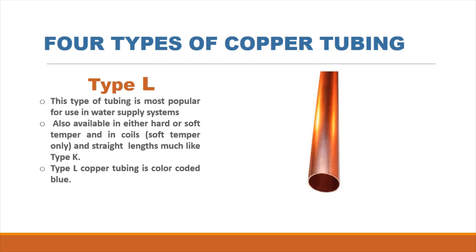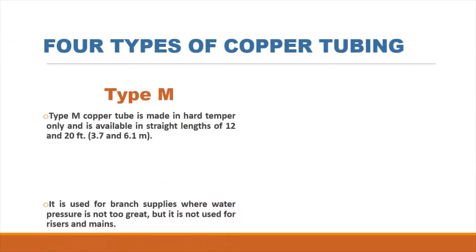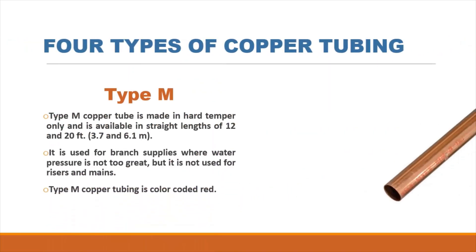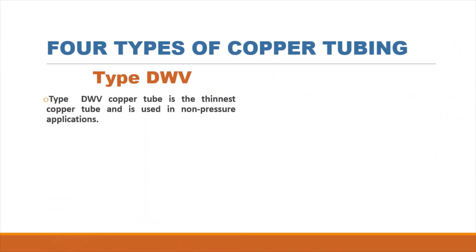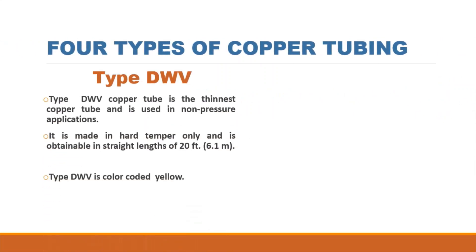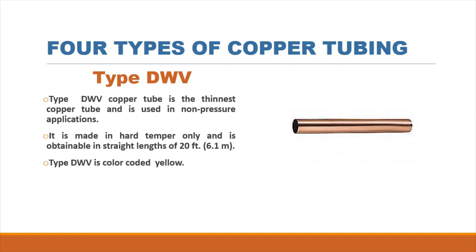Type L copper tubing is color-coded blue. Type M copper tube is made in hard temper and is available in straight lengths of 12 and 20 feet. It is used for branch supplies where water pressure is not too great, but it is not used for risers and mains. Type M copper tubing is color-coded red. Type DWV copper tube is the thinnest copper tube, used in non-pressure applications, made in hard temper only and obtainable in straight lengths of 20 feet.